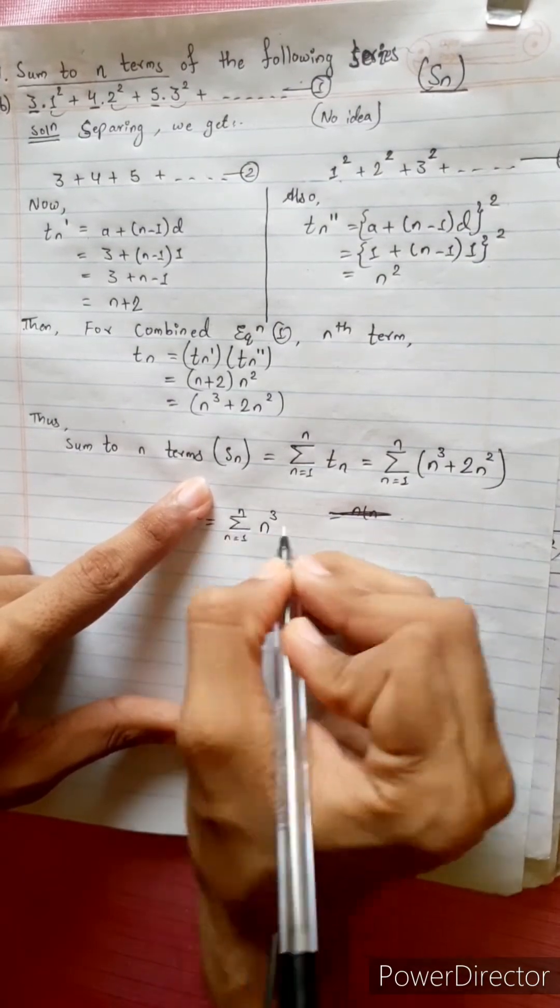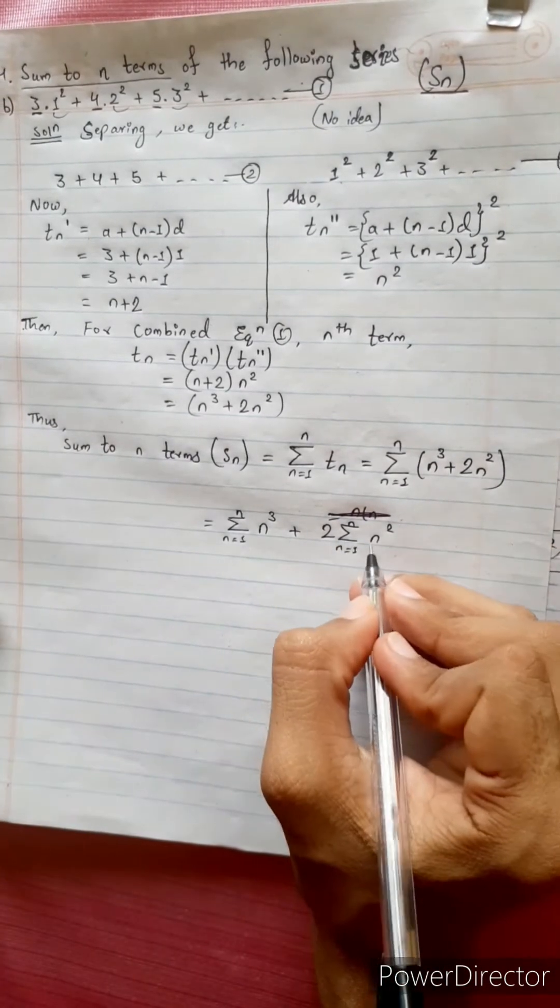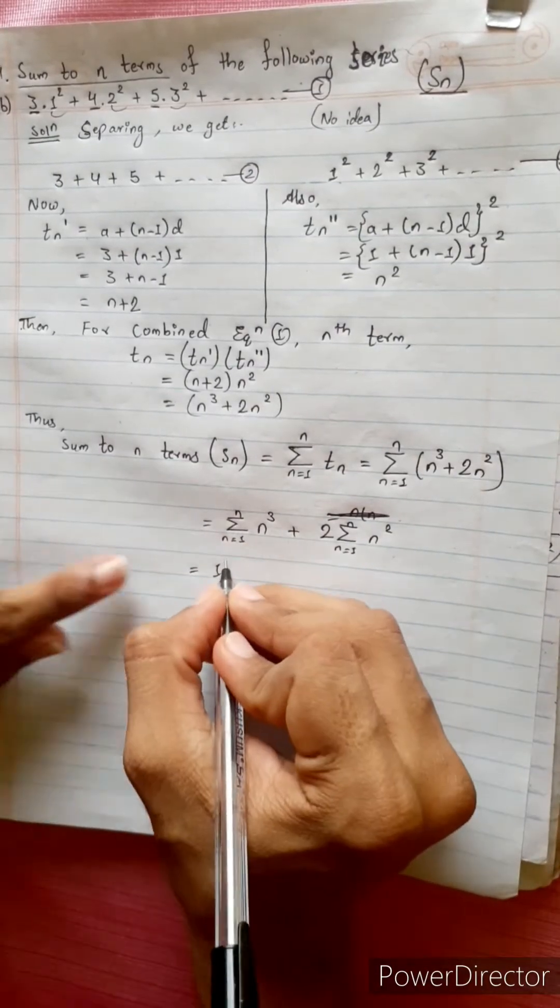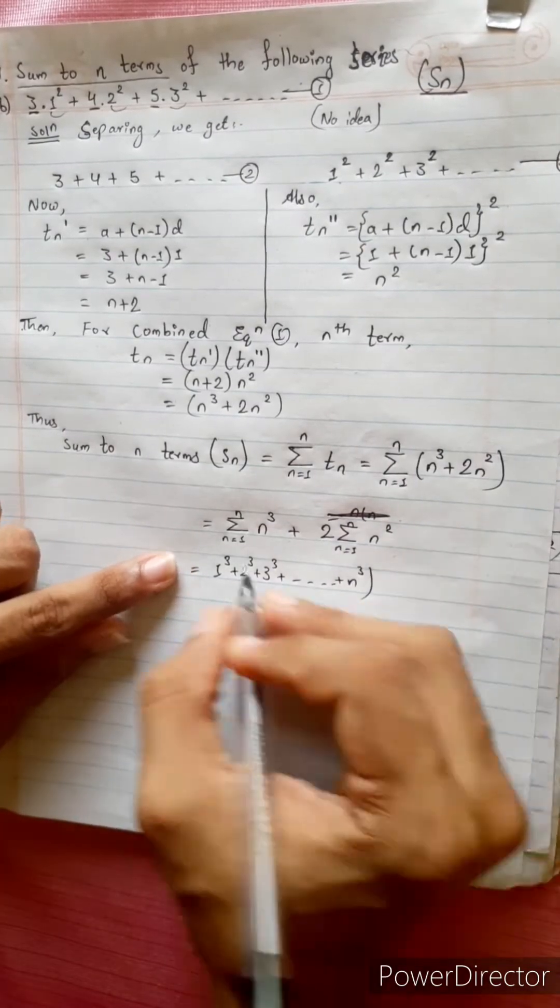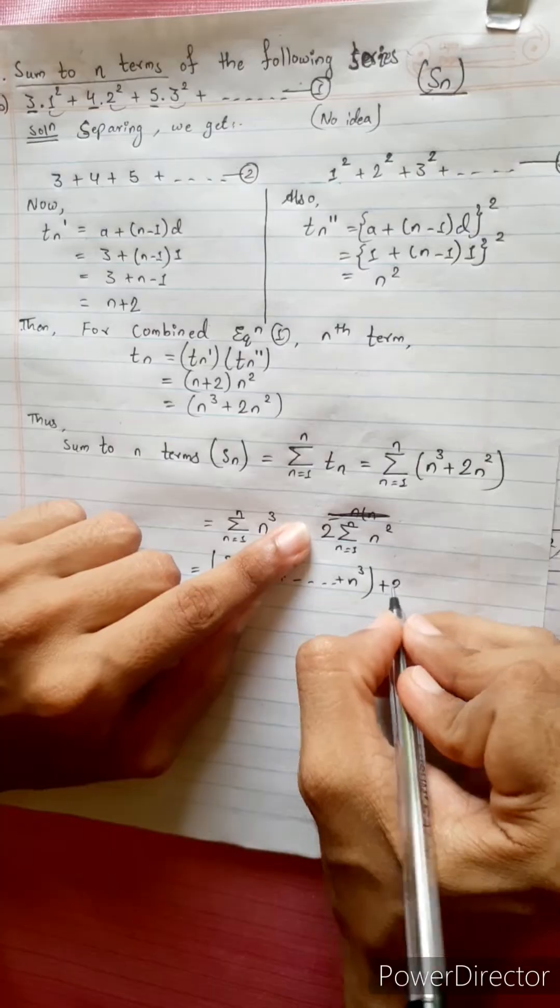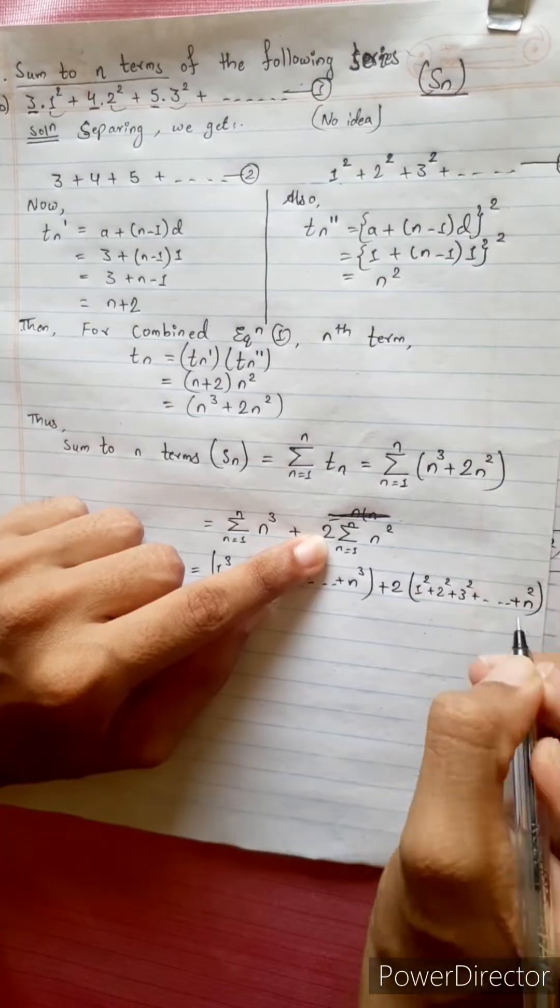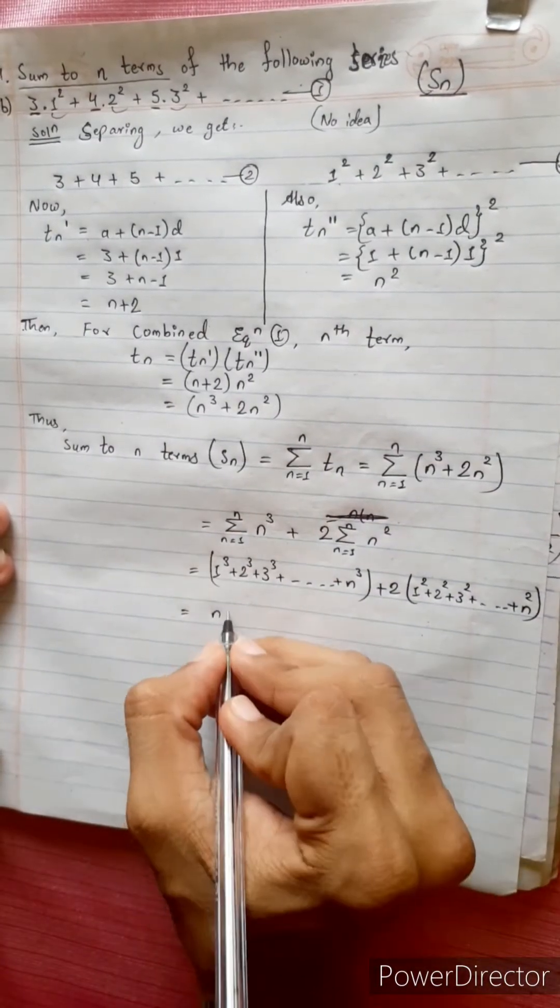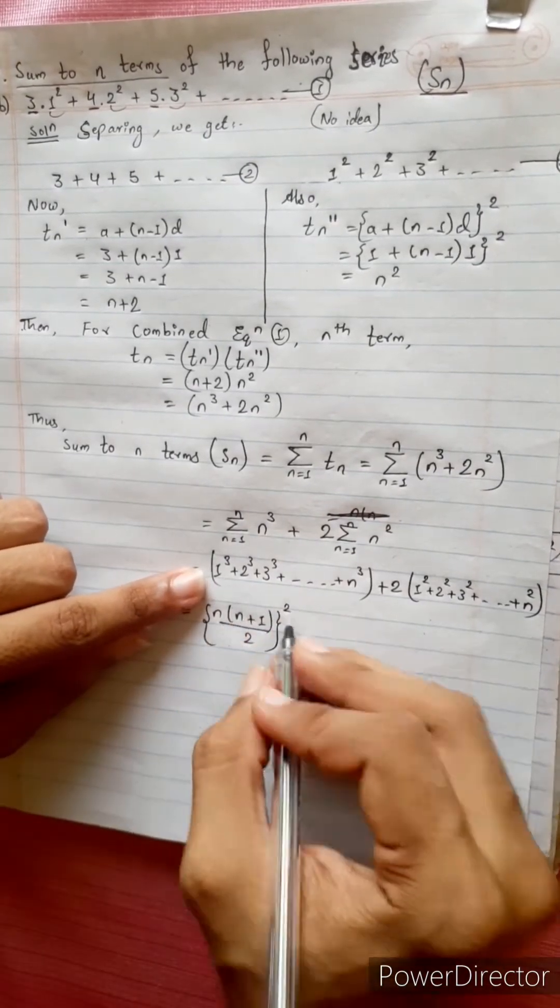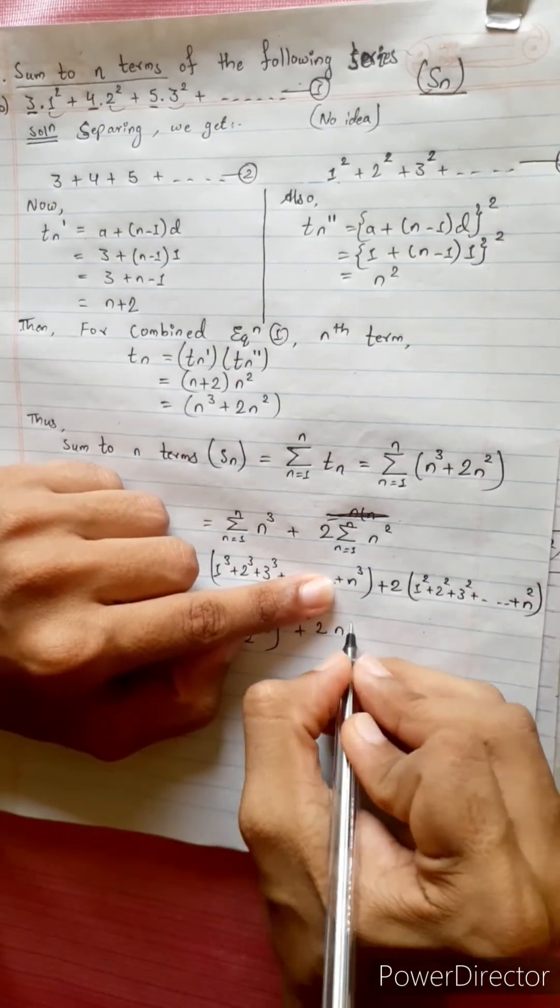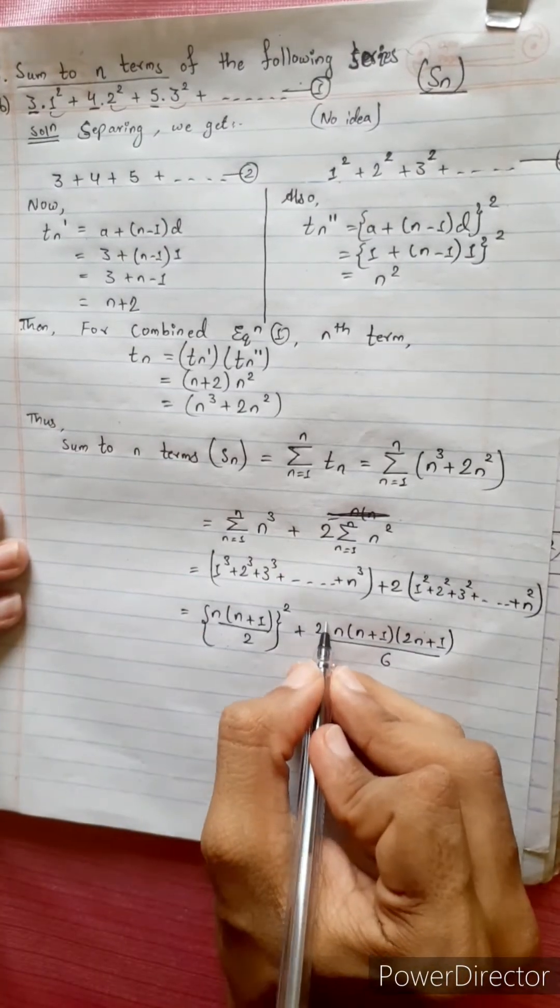Plus 2 times summation n square. This summation means 1 cube plus 2 cube plus 3 cube plus 4 cube plus 5 cube up to n cube, plus 2 times 1 square plus 2 square plus 3 square and so on.